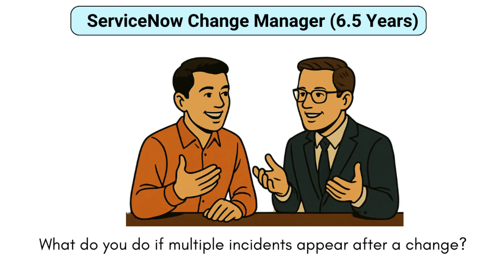What do you do if multiple incidents appear after a change? Okay, so this is a real-time situation. It usually means the change has caused some issues. In this case, I immediately coordinate with the technical teams to either fix the issue or do a rollback. I also notify all the impacted users and update the change ticket. We then hold a post-implementation review to find out what happened — whether the change failed because of testing, a missing dependency, or a deployment issue. All these things will be thoroughly checked and then we come to a conclusion and prepare actions so that this will not happen again in future.